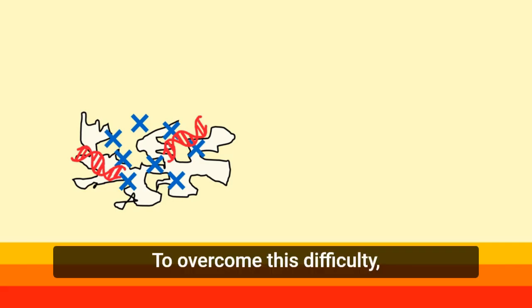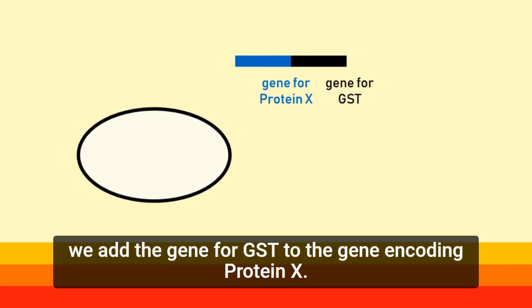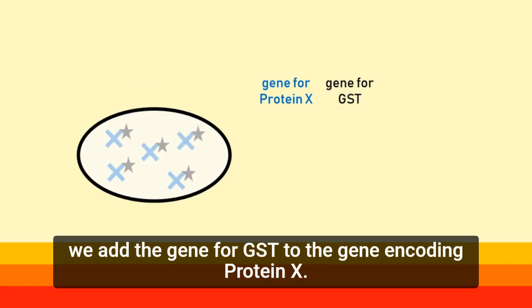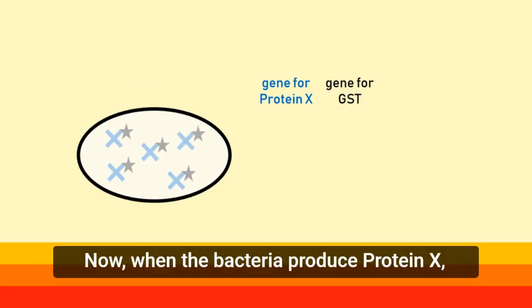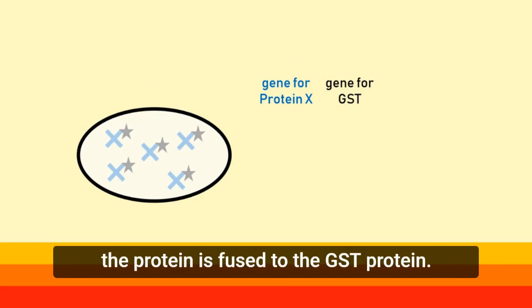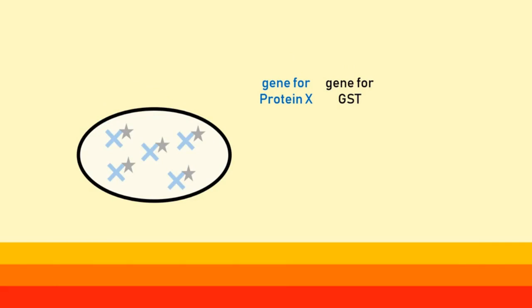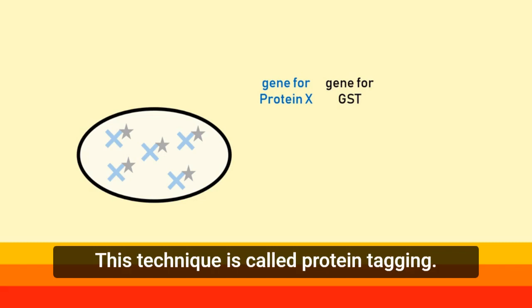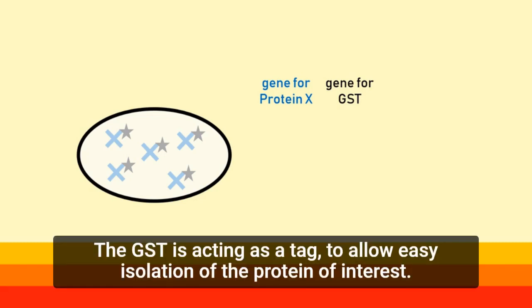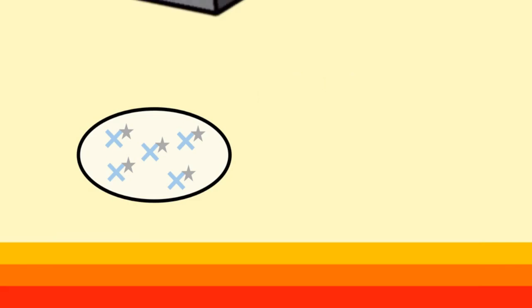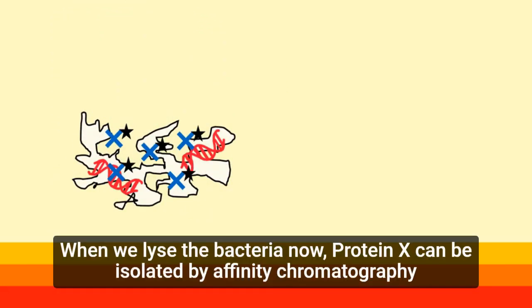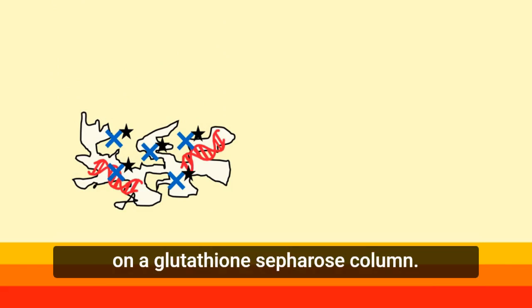To overcome this difficulty, we add the gene for GST to the gene encoding protein X. Now, when the bacteria produce protein X, the protein is fused to the GST protein. This technique is called protein tagging. The GST is acting as a tag to allow easy isolation of the protein of interest. When we lyse the bacteria, protein X can be isolated by affinity chromatography on a glutathione sepharose column.